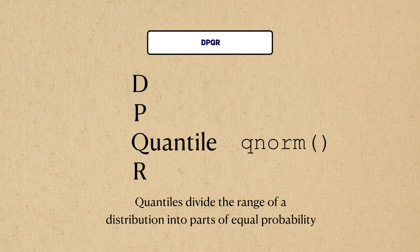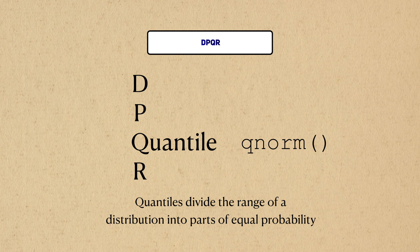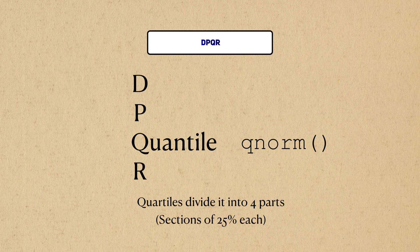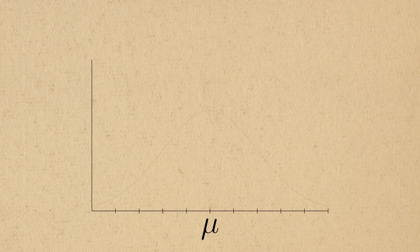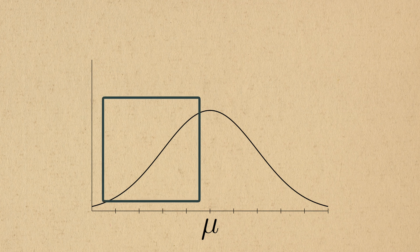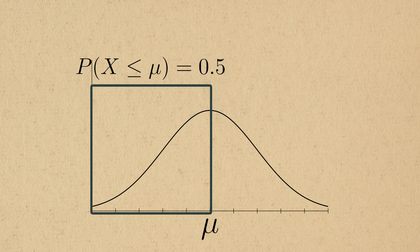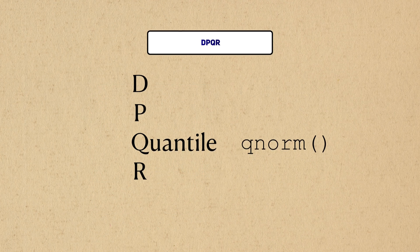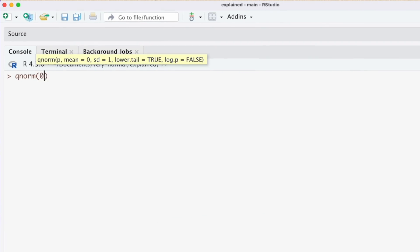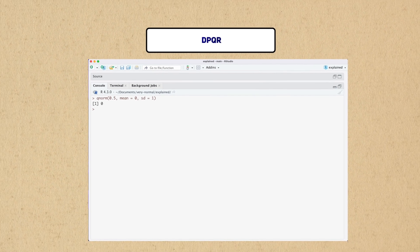q stands for quantile. Quantiles are cut points that divide the range of a probability distribution into equal parts. You may have heard of quartiles, which divide it into 4 parts, or percentiles, which divide it into 100 parts. For example, the mean of a normal distribution represents the 50th percentile, because the probability of observing any value less than the mean is 50%. You don't need math for this, you can just see it by symmetry. To use the qnorm function, we need to give it a specific probability, as well as the parameters of the normal that we're looking at. If I put 50%, or .5, the qnorm function should give me 0. And it does.